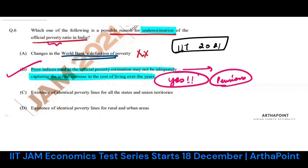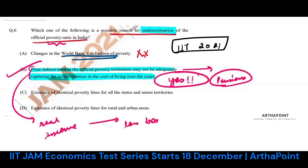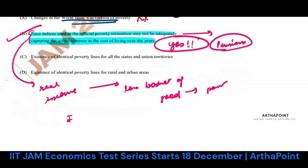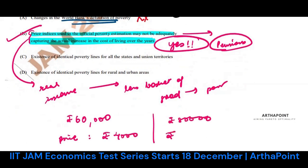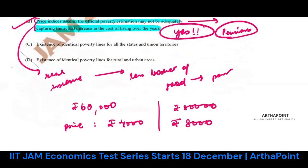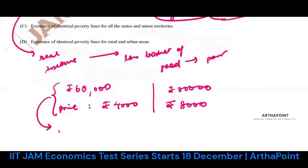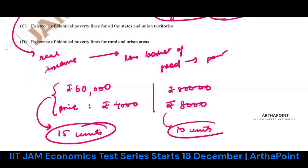Poverty is always measured in terms of real income. If I earn a certain income that fetches me a smaller basket of goods over time, I become poor. For example, I was earning ₹60,000 and a basket of goods cost ₹4,000 — I could buy 15 units. Now I earn ₹80,000 but the basket costs ₹8,000 — I can only buy 10 units. I am comparatively poorer.